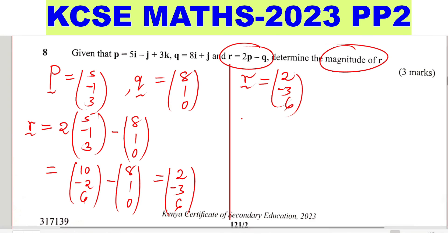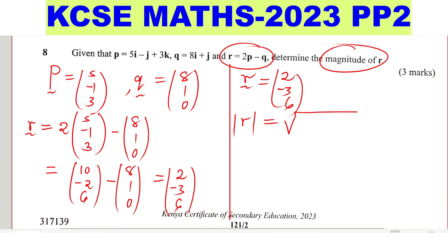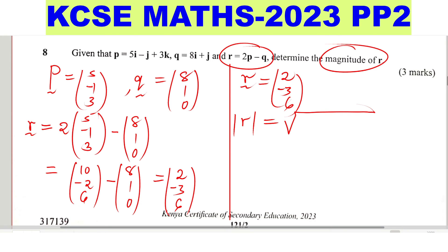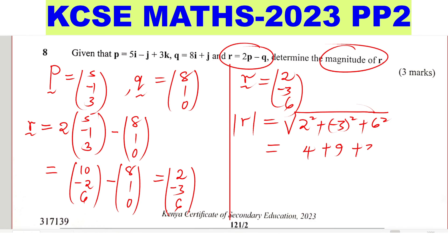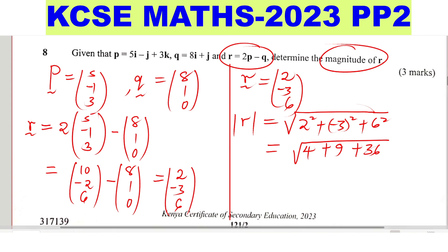Now we want to get the magnitude. The magnitude of r is found by squaring each coefficient of i, j, and k, summing them, and taking the square root. So that is the square root of 2 squared plus negative 3 squared plus 6 squared, which gives the square root of 4 plus 9 plus 36, equals the square root of 49, which gives the magnitude as 7 units.